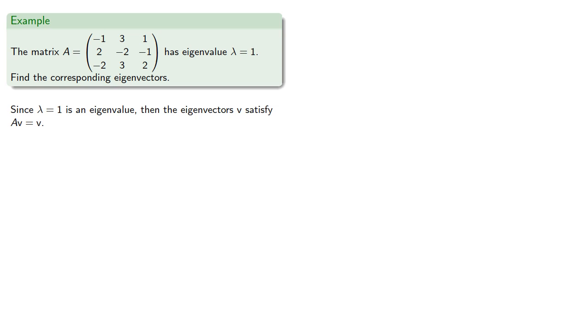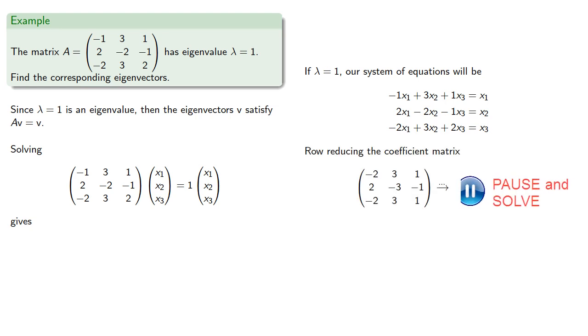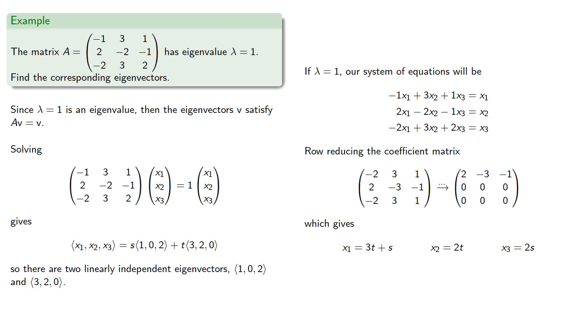And so solving this equation for the components of that unknown vector v, if lambda equals 1, our system of equations will be... And row reducing the coefficient matrix gives us... which gives us the parameterized solution with two free variables, s and t. And so we have our eigenvector as a linear combination of two vectors. And so there are two linearly independent eigenvectors.